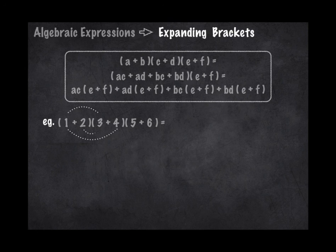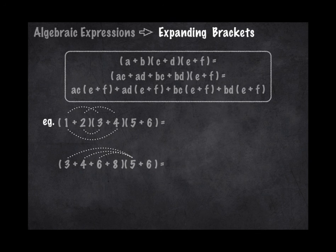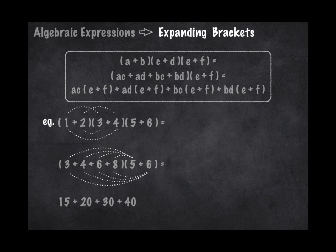So 1 times 3, 1 times 4, 2 times 3, and 2 times 4. Write that all out. So now we've got two brackets. Now again this is just timesing everything in the first bracket by everything in the second bracket. So what we're doing is 3 times 5, 4 times 5, 6 times 5, 8 times 5, which is 15, 20, 30 and 40. And then the same again with 6. So 3 times 6, 4 times 6, 6 times 6, and 8 times 6. So as you can see here, every single number has got a line going to it, so we know that we've not missed out any numbers. And that's 18, 24, 36 and 48. Add them all together and you've got 231.